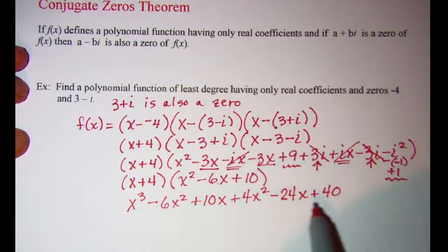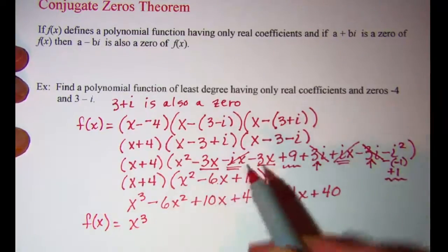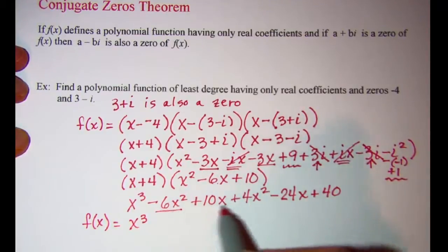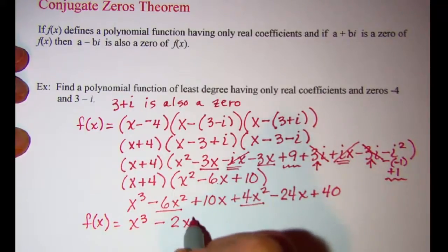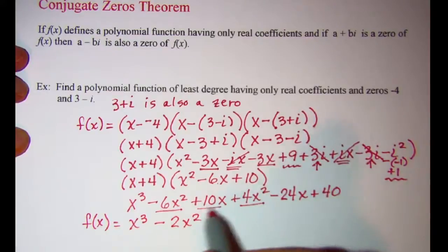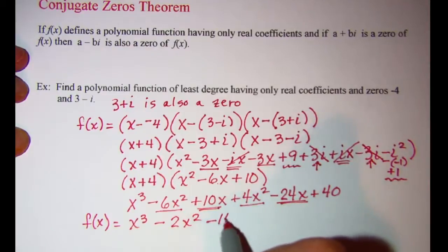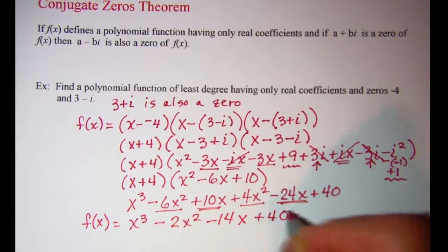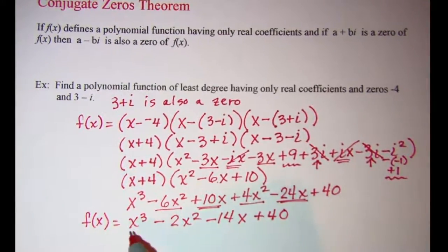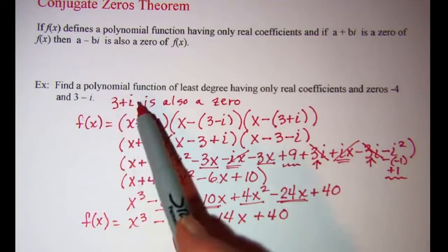x cubed is the only x cubed term. Negative 6x squared and positive 4x squared gives negative 2x squared. Positive 10x and negative 24x gives negative 14x. And then plus 40. So this is my function that has zeros of negative 4, 3 minus i, and 3 plus i.